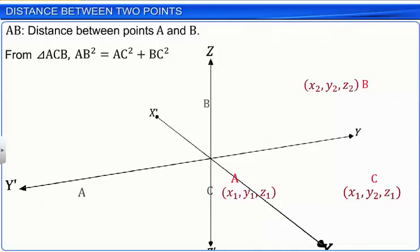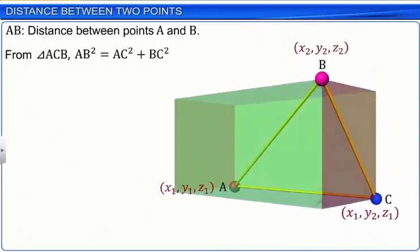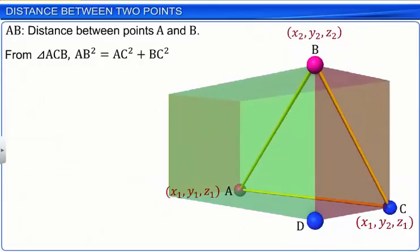Next, we consider point D on the parallelepiped as shown. Since points B and D lie on the same line parallel to the Z-axis, its X and Y coordinates are the same as that of point B. Hence, the coordinates of point D are X2, Y2, Z1.